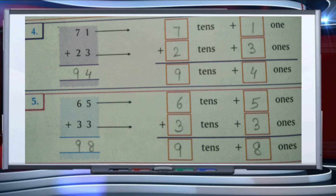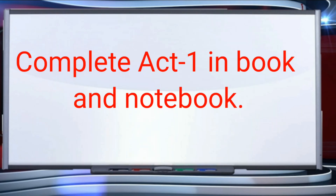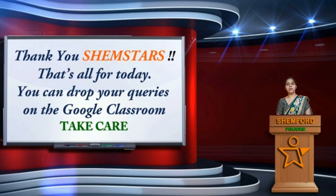Fifth question: 65 plus 33. We write 65 as six tens plus five ones, and 33 as three tens and three ones. Add the ones: five plus three equals eight, giving eight ones. Add the tens: six plus three equals nine tens. So the answer is ninety-eight. You have to complete Activity 1 in your book and notebook as well. Thank you, Cham Stars — that's all for today. You can drop your queries on Google Classroom.